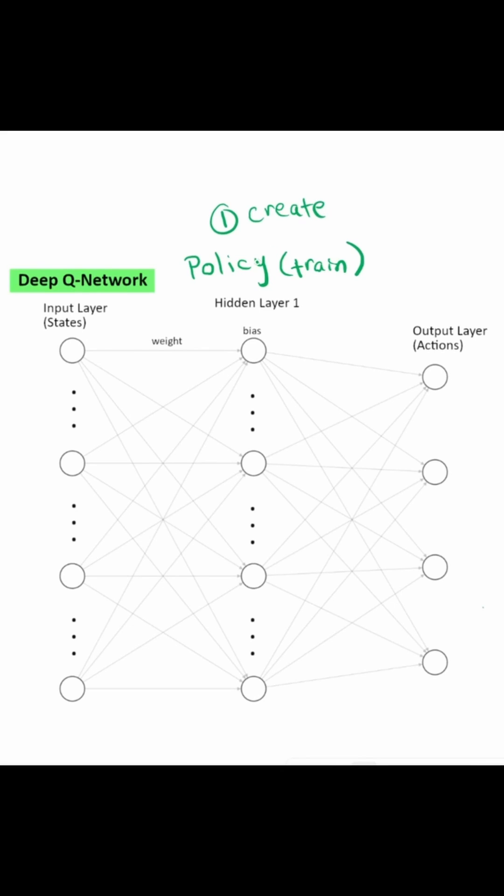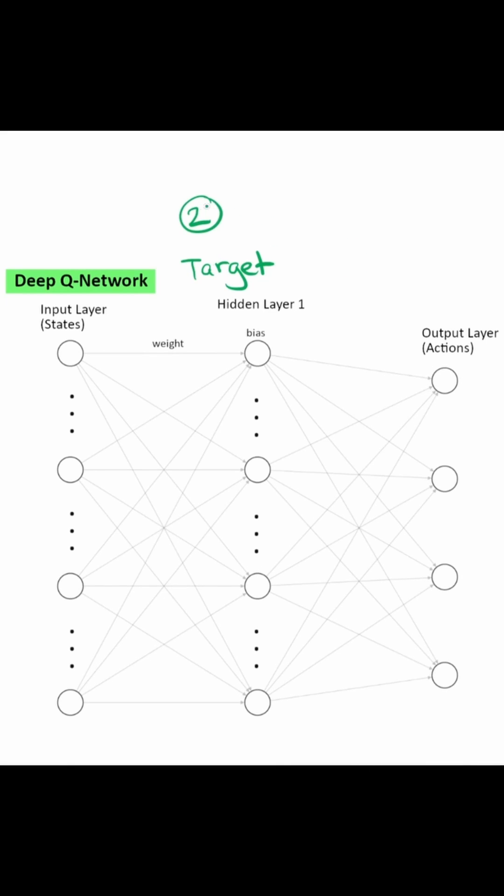Step 1, creation of this policy network. Step 2, we make a copy of the policy network into the target network. So both networks are identical.